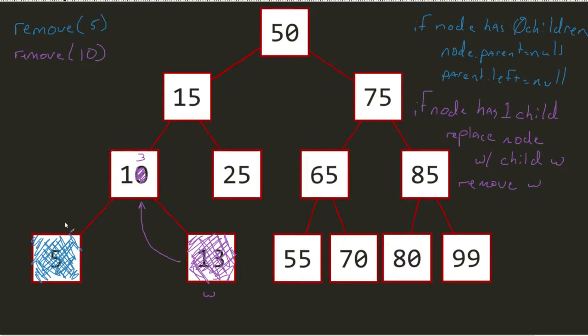The last example would be something like remove 15. Now there's actually two different ways, and depending on the implementation, I would either want to look for my in-order predecessor or my in-order successor. You'll find different algorithms that ask for both of them.